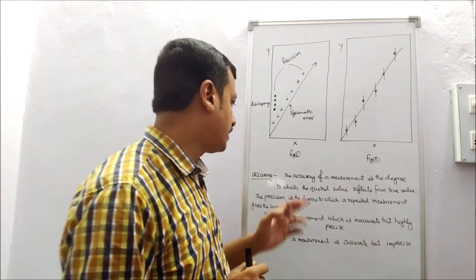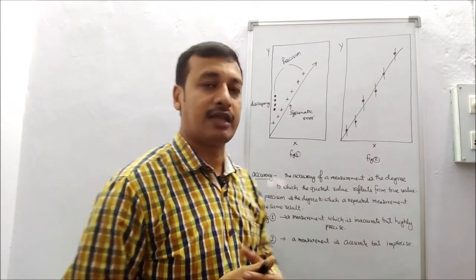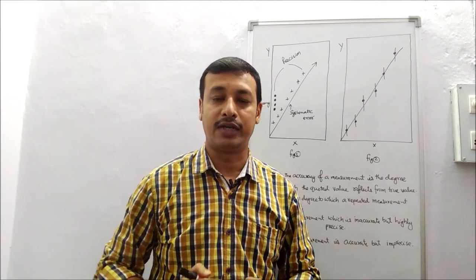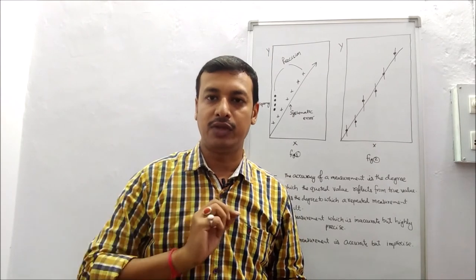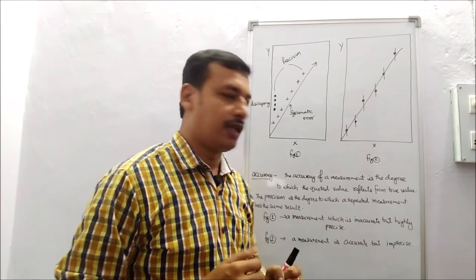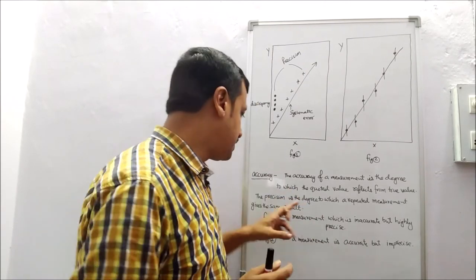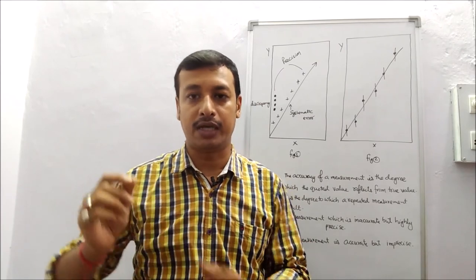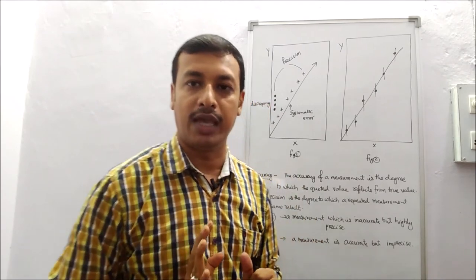Accuracy is the degree to which the quoted value reflects the true value — how far the experimental value is from the true value. Precision is the degree to which repeated measurements give the same result. If repeated experiments give a value at the same point, that is called precision.